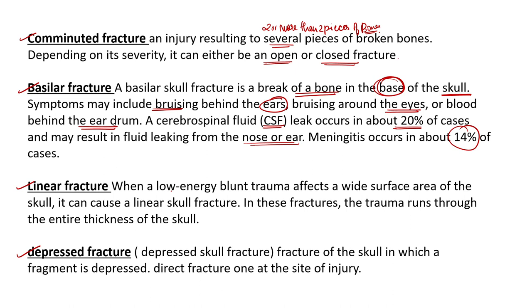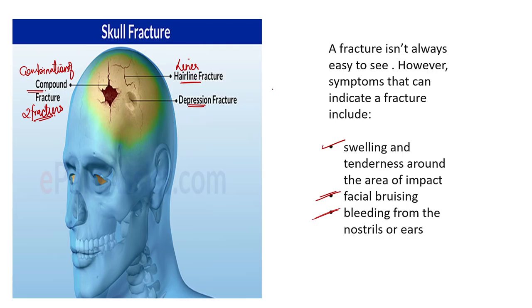A linear fracture occurs when a low-energy blunt trauma affects a wide surface area of the skull. It can cause a linear skull fracture. In these fractures, the trauma runs through the entire thickness of the skull. This is also called a hairline fracture.